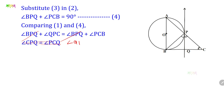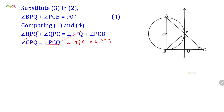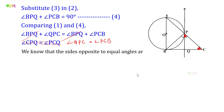Therefore, angle QPC equals angle PCB. Since the angles opposite to equal angles are equal, the sides opposite to these equal angles are also equal. Therefore QC equals PQ. Let this be Equation 5.